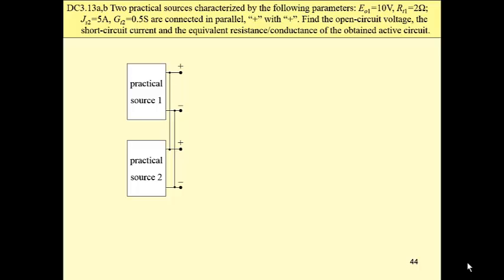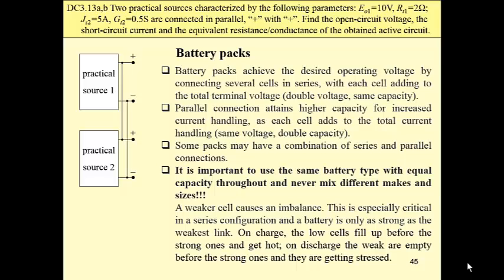Battery packs. At first, a parallel connection, then a series connection. Battery packs achieve the desired operating voltage by connecting several cells in series, with each cell adding to the total terminal voltage. A parallel connection attains higher capacity for increased current handling, as each cell adds to the total current handling.